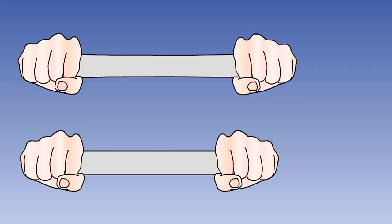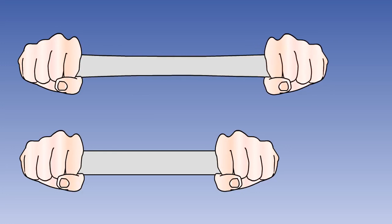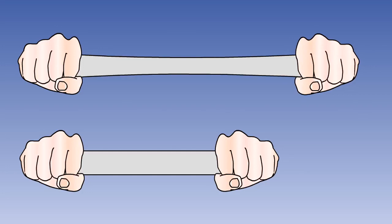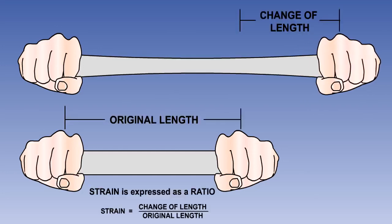When an external force of sufficient magnitude acts on a structure, the structural dimensions change. This change is known as strain. Strain is measured as a ratio of the change in a material's length to its original length and is a measure of the deformation of any loaded structure. In our extreme example shown here, the original length of the material is 2 metres. When a tensile load is applied, its length increases to 2.5 metres, giving an increase in length of 0.5 metres. Therefore, the strain being felt by this material is 0.5 divided by 2, which is 0.25.